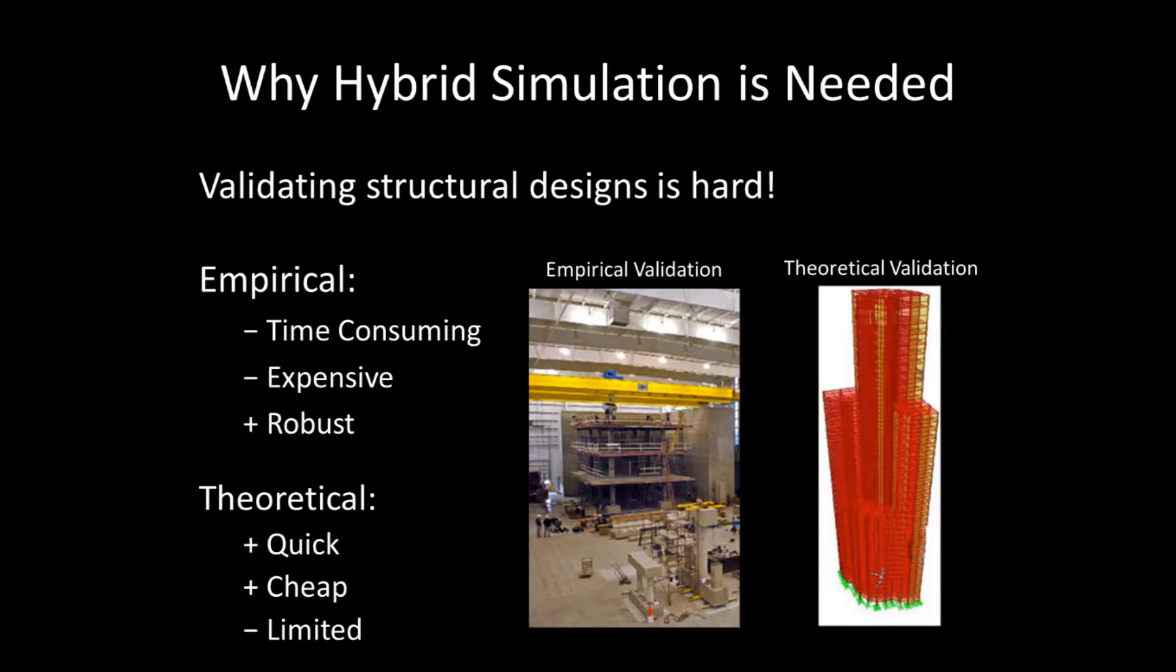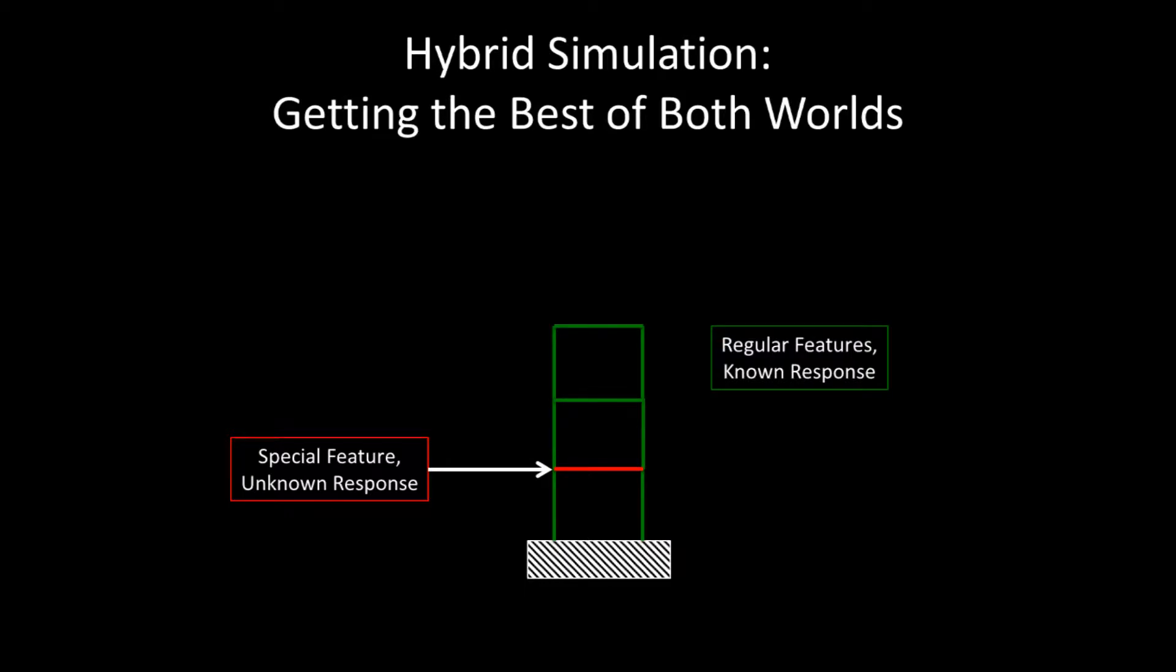Hybrid simulation is a solution that allows us to combine physical experimentation alongside computer simulation. Rather than building an entire structure just to test one new idea, we can build the one new idea and simulate the rest of the structure. Suppose we have a new idea we want to try in a three-story building.